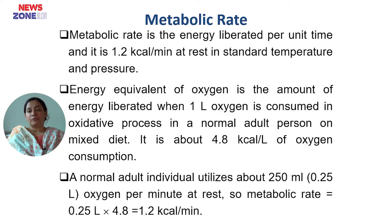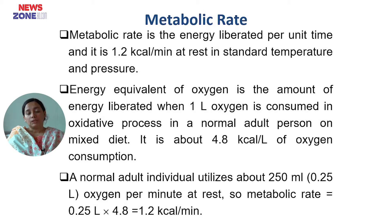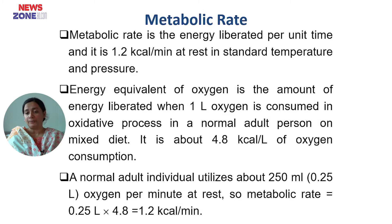Metabolic rate at rest means the energy liberated per minute is 1.2 kilocalorie per minute. Energy equivalent of oxygen is the amount of energy liberated when one liter of oxygen is consumed in an oxidative process. In a normal adult person on a mixed diet, it is about 4.8 kilocalorie per liter of oxygen consumption. A normal adult individual utilizes about 250 ml of oxygen per minute at rest.